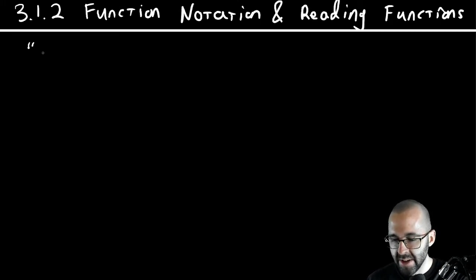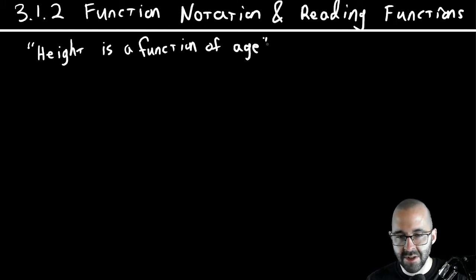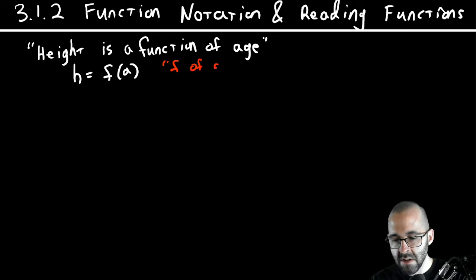So let's kind of play with that and write things down. We start with height is a function of age. The way that we write that: h equals f of a. This is not multiplication, this is function notation, and this is literally pronounced 'f of a'. And again, as a reminder, this is not multiplication.